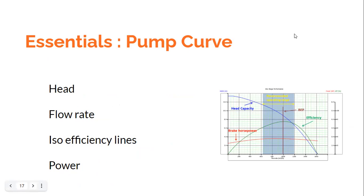Now we need to go for pump selection and look at the pump characteristics. Pump characteristics can be expressed either as a table or as a curve, as seen here. The terms on the pump curve include: head, flow rate, efficiency lines, and brake horsepower. The pump curve is depicted here, and whenever you look for pump selection you will be offered the pump curve, from which you should be able to select an appropriate pump.